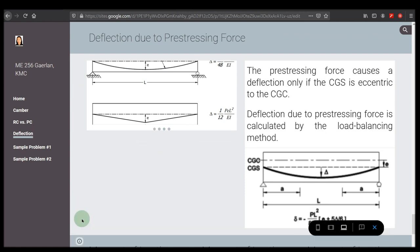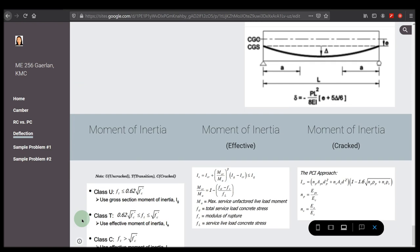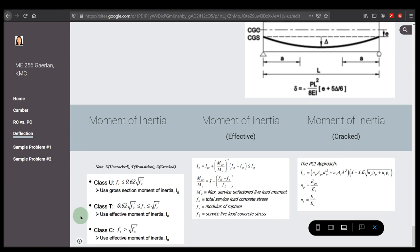We have here moment of inertia where U is uncracked, T is for transition, C is cracked. We also have the formula for effective moment of inertia and moment of inertia when it is cracked.